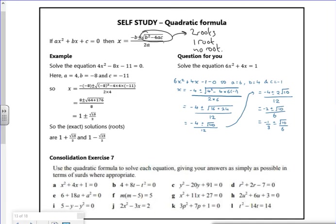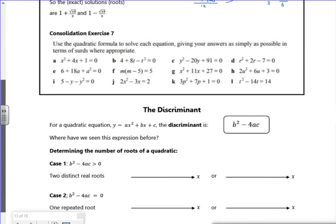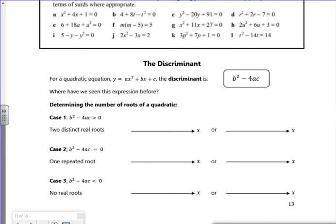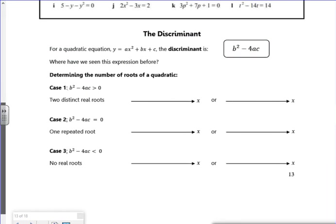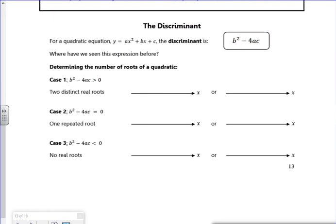Which is what we need for this next lesson—that idea that there's two roots, one root, or no root. And the bit in the square root is called the discriminant, so some people will call it capital D, some people use delta, but it's just b² - 4ac, that's all we're bothered about.